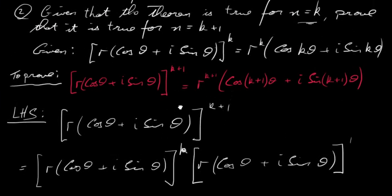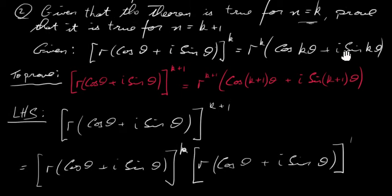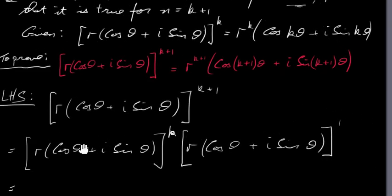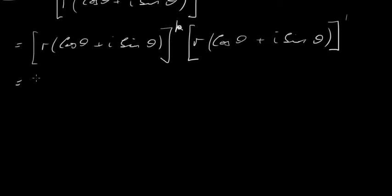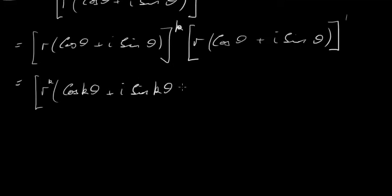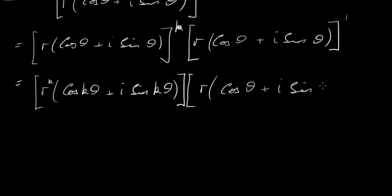Now we know this is our assumption. Looking back at our assumption, if you raise our complex number to the power of k, it's r^k(cos kθ + i sin kθ). So I'm going to rewrite this in that format because I know it's equal — or I've assumed it's equal. On the left-hand side then, we have r^k(cos kθ + i sin kθ) multiplied by r(cos θ + i sin θ).